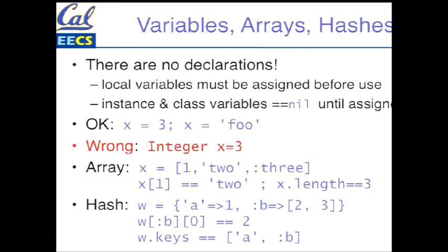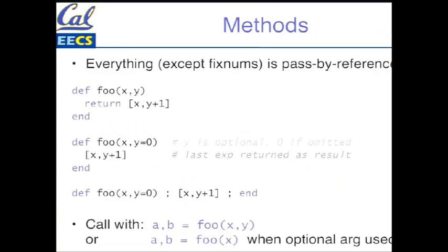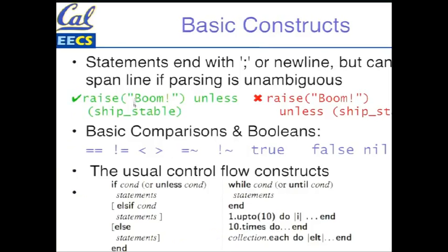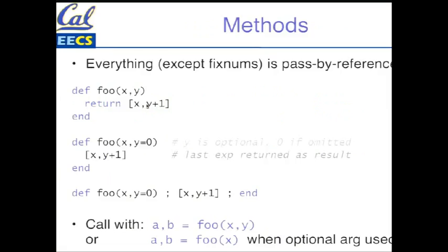We're almost through with nuts and bolts. Everything is basically passed by reference. Here's a very simple method definition — foo of x and y, which returns an array of x and y plus one. You could call it with 'a, b = foo(x, y)' — you can assign to individual elements as well as to an array. I could also supply a default value for some arguments in my method definition, meaning if those arguments aren't present in the call, they'll be assigned the default value. For obvious reasons, you couldn't specify a default value for x but then make y a required parameter, because there'd be no good way to parse that. Also, although typically statements are separated by new lines, they can be separated by semicolons — less usual, but sometimes you'll see entire short methods on a single line.